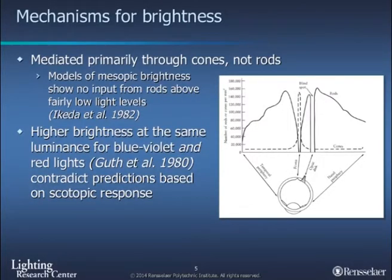The mechanisms for brightness: one of the things demonstrated going back many years is that rods play almost no role in brightness until you become purely scotopic or in very dim light conditions. Evidence for that is that bluish violet and red lights — these saturated lights — will appear brighter than a white light at the same luminance. If it was rods only, the red lights would not appear brighter necessarily, because the rods are not very sensitive to long wavelengths. So it is the hue and saturation as well as the achromatic content that really drives our perceptions of brightness, and rods are not playing an important role in this discussion.